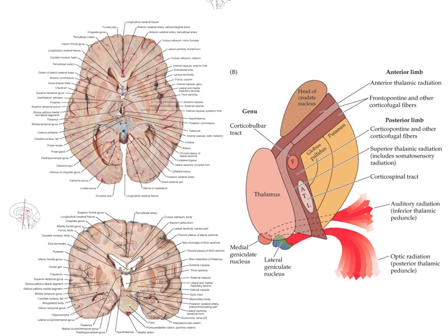As you should recall from the lecture, we're primarily interested in the posterior limb when talking about the motor system, because this is what contains descending motor fibers and upper motor neurone axons. The view on the right hand side is of the left internal capsule, and you can see it has the anterior limb, the posterior limb, and the genu — the bend.